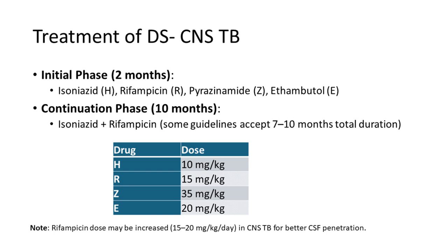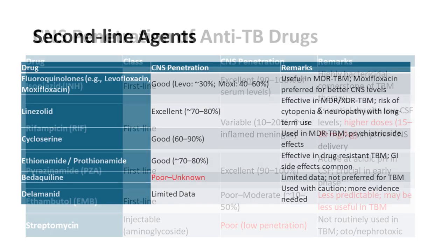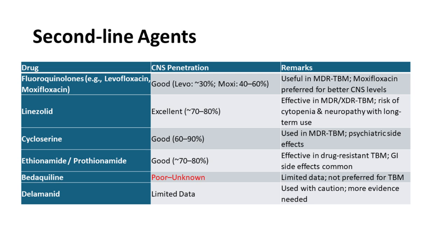Among first-line drugs, isoniazid has very good CNS penetration, pyrazinamide also has very good penetration, but rifampicin has poor penetration at current dosing — so go up to 20 mg/kg. Ethambutol has very poor CNS penetration. Streptomycin is rarely used now and also has poor CNS penetration. Among second-line drugs for drug-resistant TB, fluoroquinolones, linezolid, cycloserine, and ethionamide have good CNS penetration. Bedaquiline has poor CNS penetration, and delamanid has limited data regarding CNS performance.